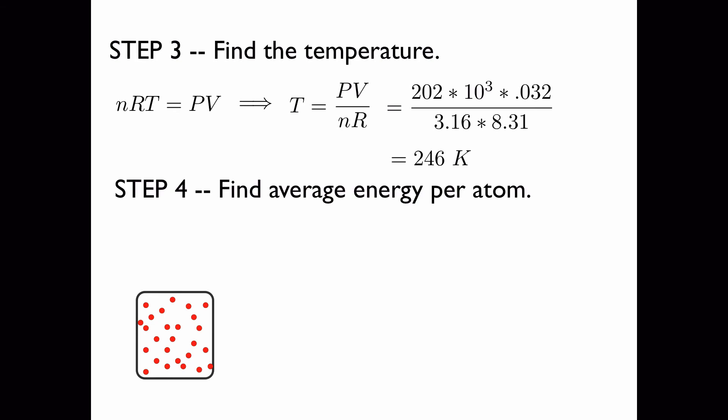Next we'll find the average energy per atom. To do this we'll need to use Boltzmann's constant which I've listed here. Now the average energy per atom is given by this expression.